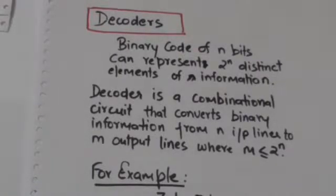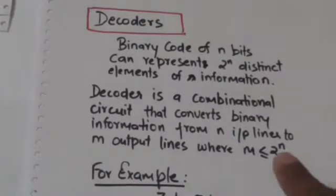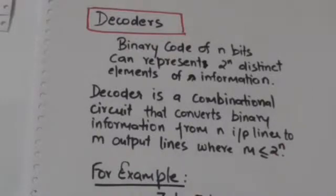When n-bit decoded information has some unused combinations or don't care conditions, then the value of m is less than 2 raised to power n; otherwise it is equal to 2 raised to power n.